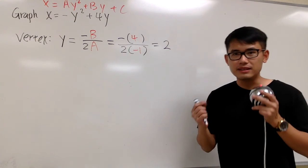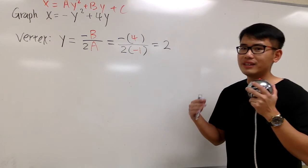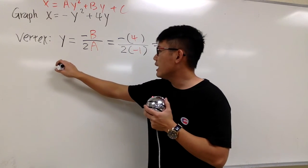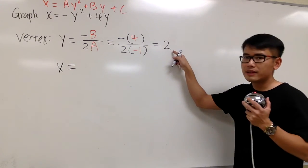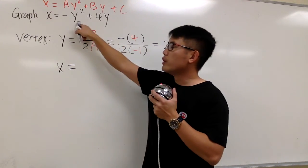And of course, a vertex is a point. Therefore, we have to get the x value as well. So to get the x value, in this case, I just have to plug in the y value into the original equation.